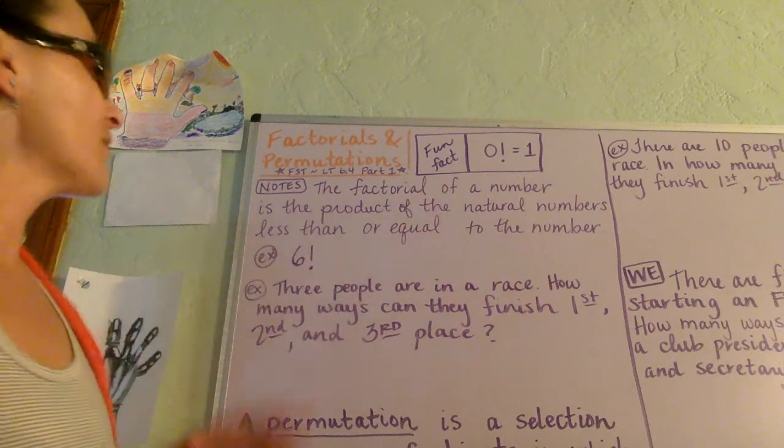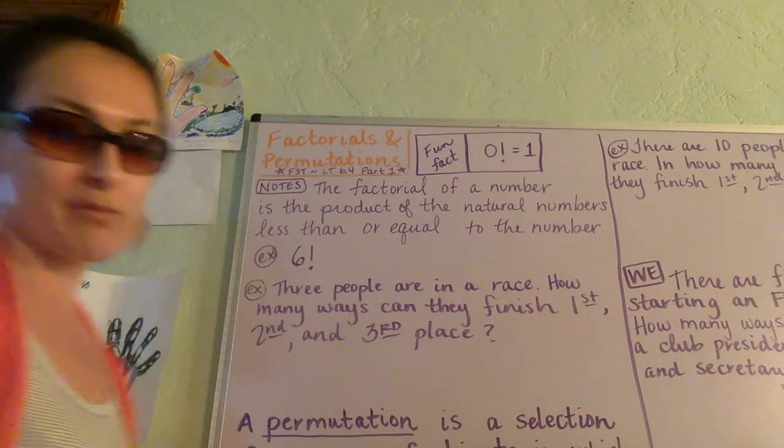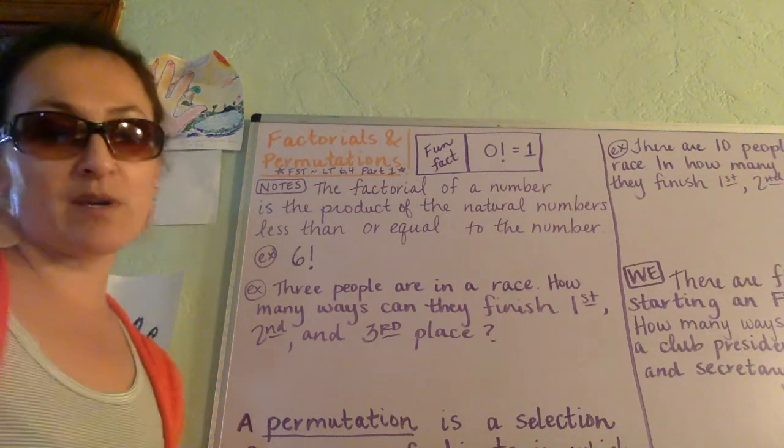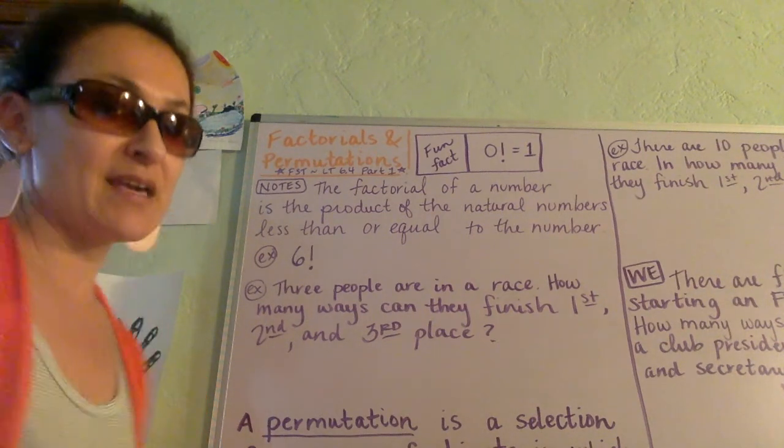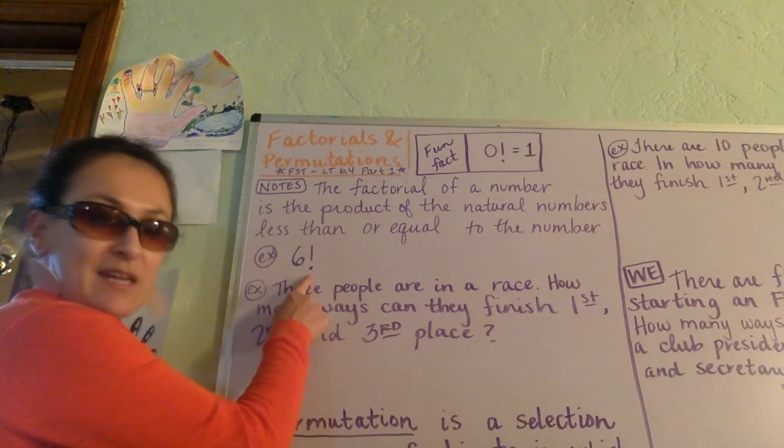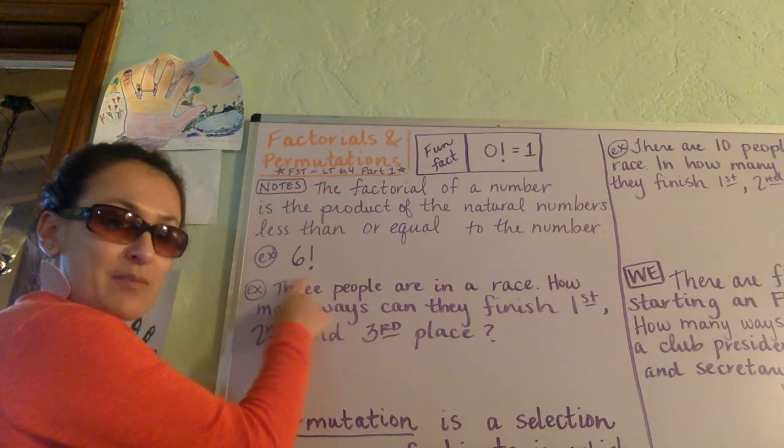The factorial of a number is the product—remember that means multiplication—of the natural numbers less than or equal to the number. Factorial in math class looks like this. It looks like an exclamation point.